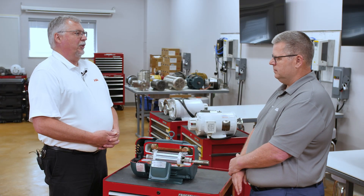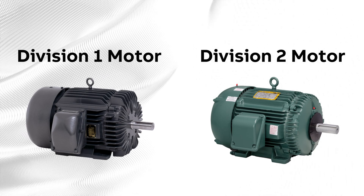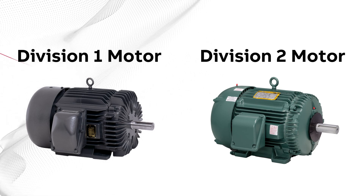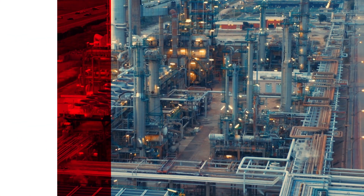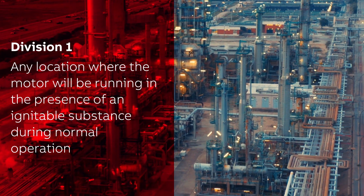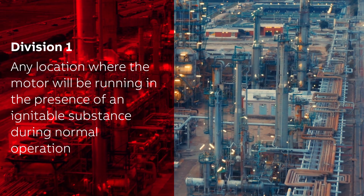Today we will be covering the differences between Division 1 and Division 2 when talking about hazardous location motors. The definition of a Division 1 area is any area where a motor will be running in the presence of an ignitable substance during normal operation. The ignitable substance can be present all the time or some of the time. The key point is the Division 1 motor will be operating in the hazardous substance during normal operation.